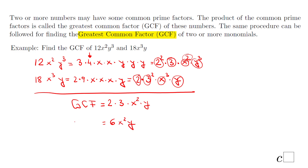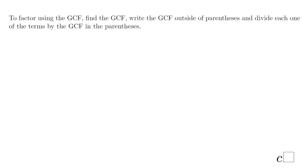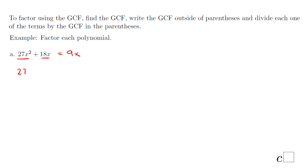As a general note from my experience, students are usually okay finding the variable part — X squared and Y in this case — but finding the GCF of 12 and 18, which is 6, can sometimes be a problem. Now let's look at the next part: factoring out using the GCF. The first thing is to find the GCF of 27x² and 18x, which is 9x.